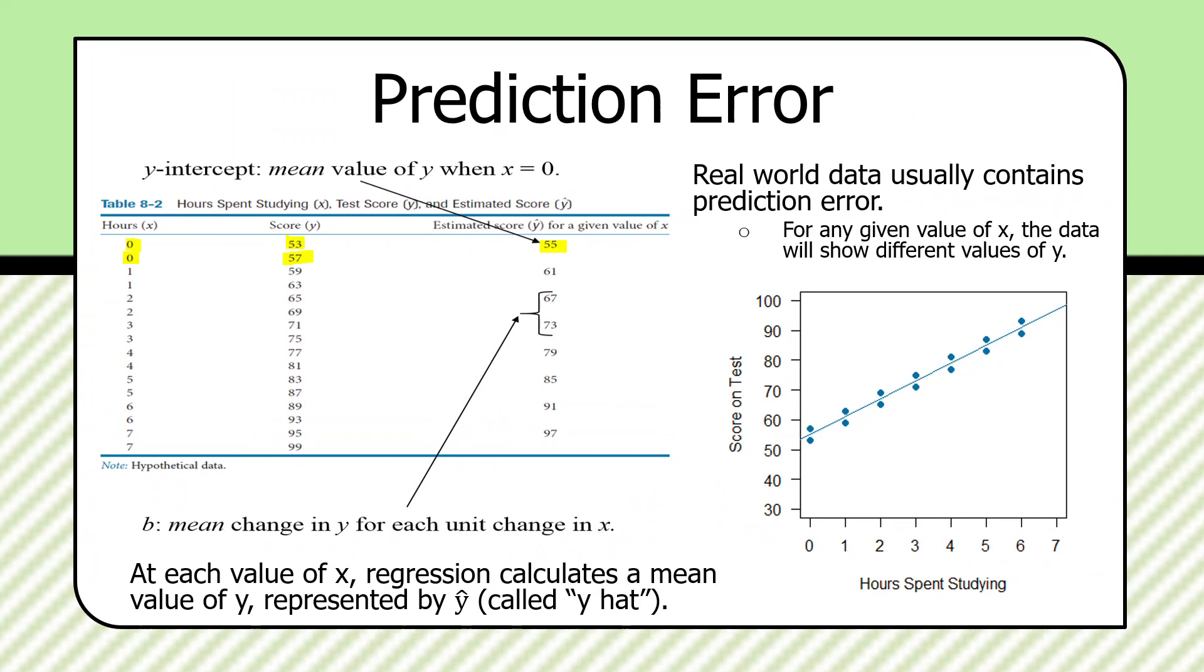And then, similarly, we have two students who studied one hour. One got a 59, one got a 63. If you add those together and divide by two, you would get 61. So, this is our estimated value of y. That is, the scores achieved on the exam for one hour spent studying for the test.